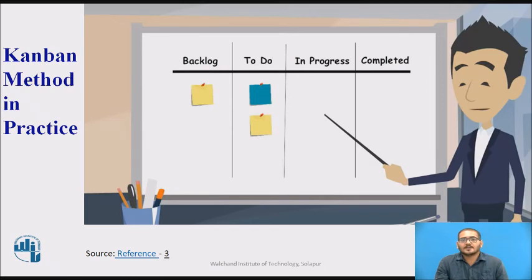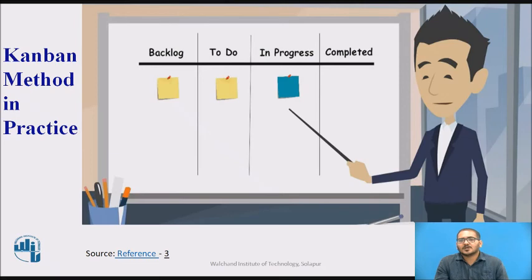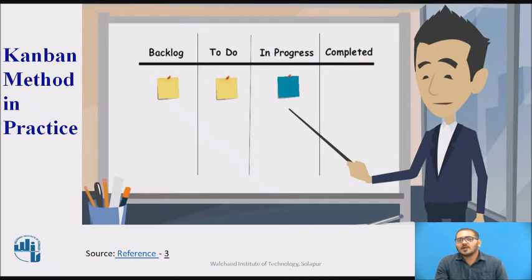As work becomes ready for the team, the product owner moves the task from the backlog to the To Do column. In the Kanban system, the topmost card has the highest priority, so there is no confusion as to which task needs to be worked next. As work begins, the card is pulled from the To Do column and placed into the In Progress column. During its journey through the board, participants can add notes, change ownership, and even invite others to participate, so everyone on the board knows exactly what is going on at any given time.